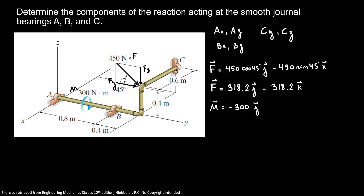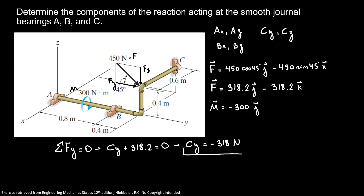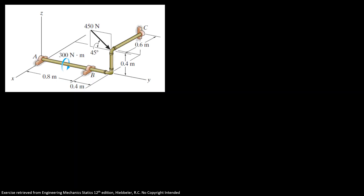So here are all of our reactions. We can see that we have just two forces in the Y axis — my force F in the J direction and my CY. So I'm going to start finding my CY. The sum of forces in Y is equal to zero: CY plus 318.2 is equal to zero. So my CY is equal to minus 318 newtons.